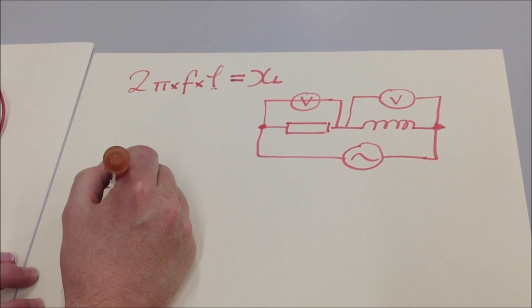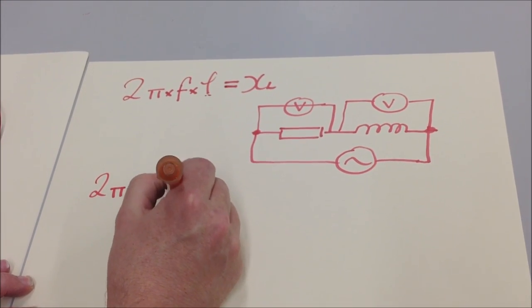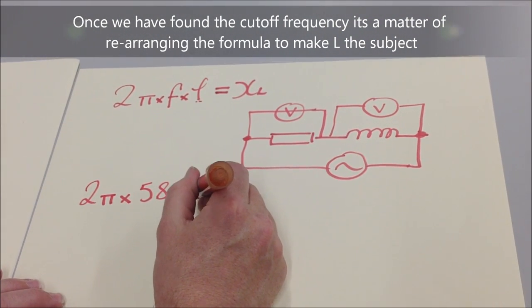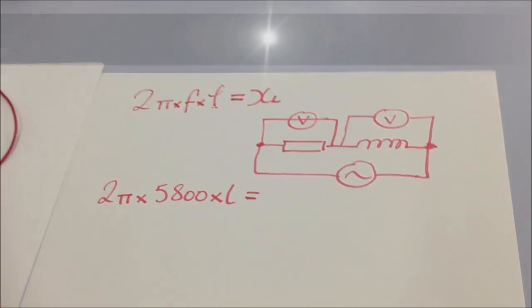And then we can use the equation for inductive reactance XL at the top there, and we can extract the L part from that to work out the inductance of the coil.